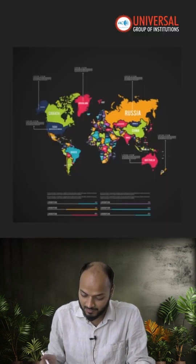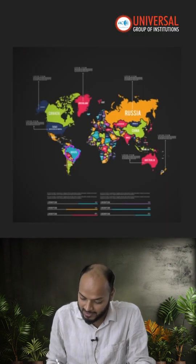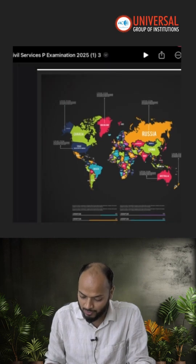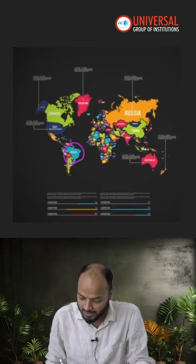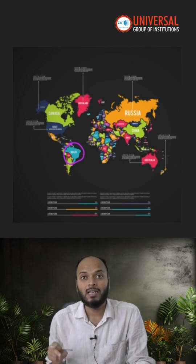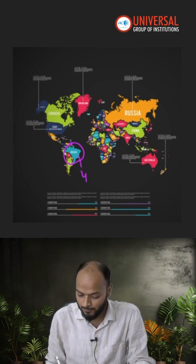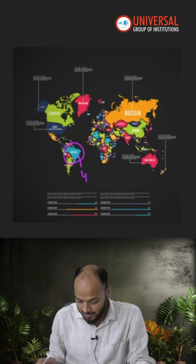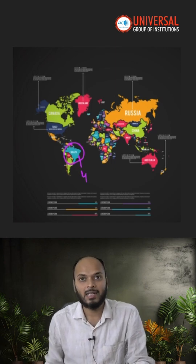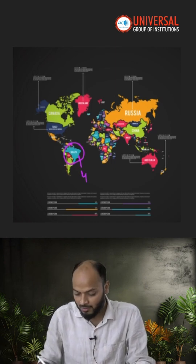So as you can see in the map here, even though Brazil's longitudinal stretch is huge, even then it has four time zones only. And because it does not have islands in other parts of the world.